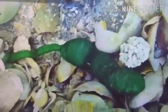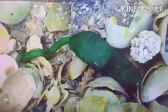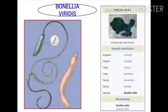Bonellia viridis shows marked sexual dimorphism. The female is approximately 200,000 times larger than the male. The female has a very long proboscis and is free-living, while the male leads an endoparasitic life inside the female's reproductive tract. This video shows a female specimen.